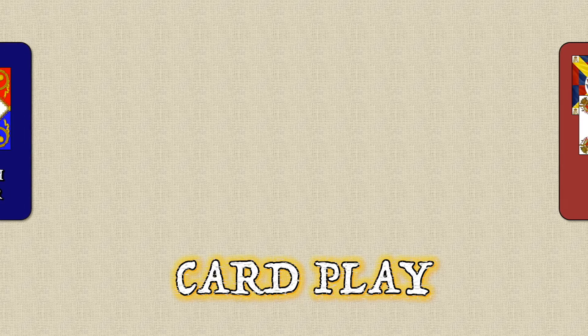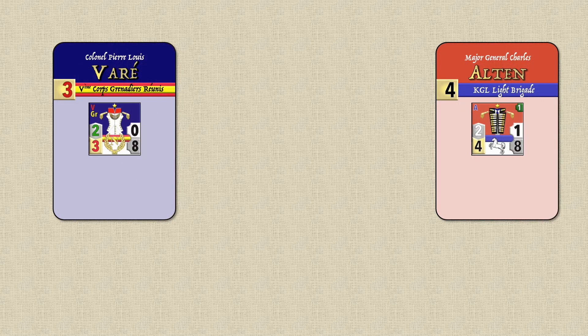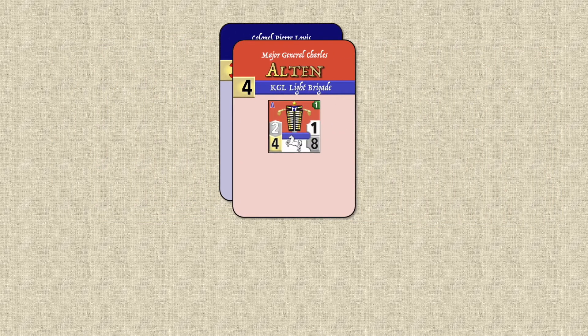Let's take a look at card play to determine the order of activation. During the activation phase, each player selects one of his command cards face down, and both reveal simultaneously. In this case the French player selected Varay with a strategy rating of three, and the Allied player selected Alton with a strategy rating of four. Due to priority rules, Alton would be activated before Varay.